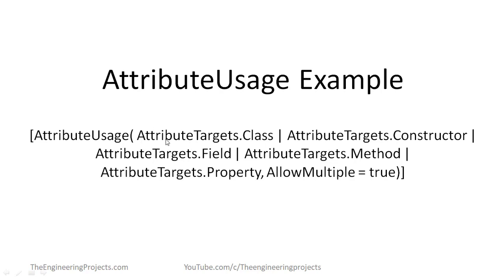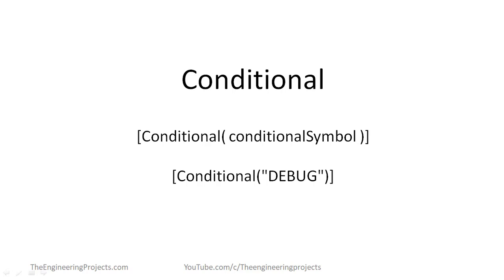Here is the AttributeUsage syntax example: the first is ValidOn set to AttributeTargets.Class, the second parameter is AllowMultiple set to true, and these are the inherited values we have used. Now moving on to the next predefined attribute — Conditional. The Conditional predefined attribute marks a conditional method whose execution depends on a specific preprocessing identifier.